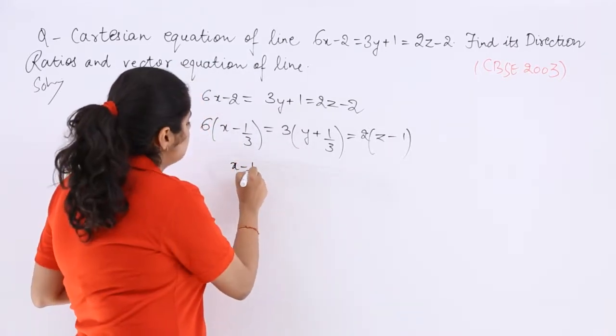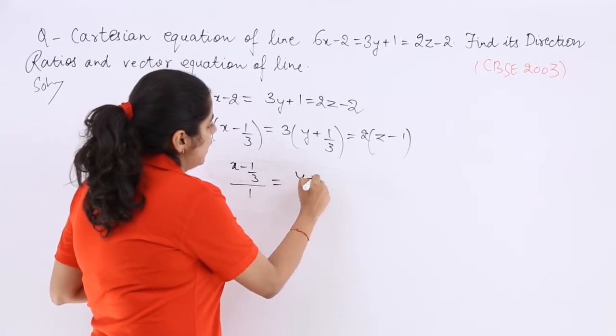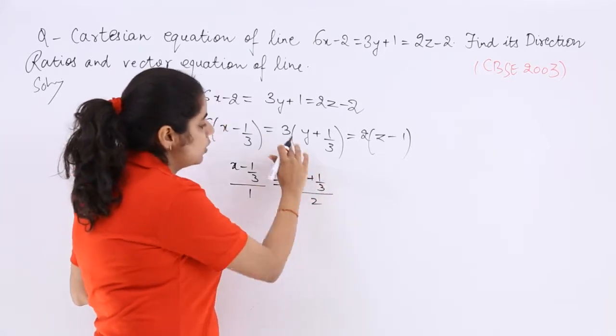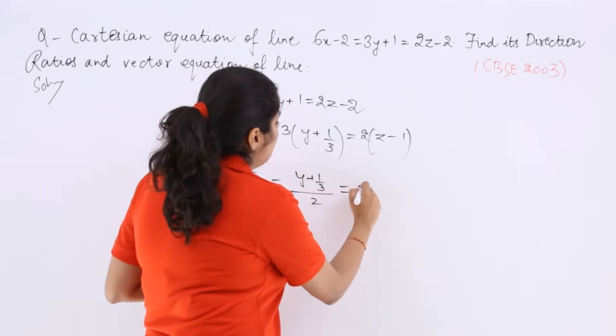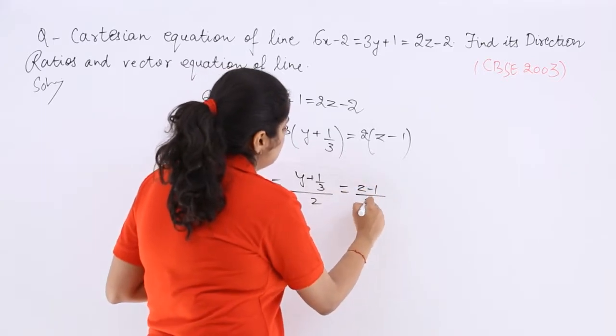So divide by 6. So it is x-1 by 3 whole over 1, y plus 1 by 3 whole over 2 because 3 twos make 6, and z-1 by 3.